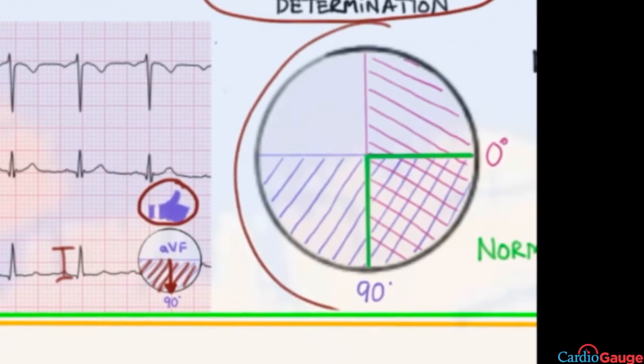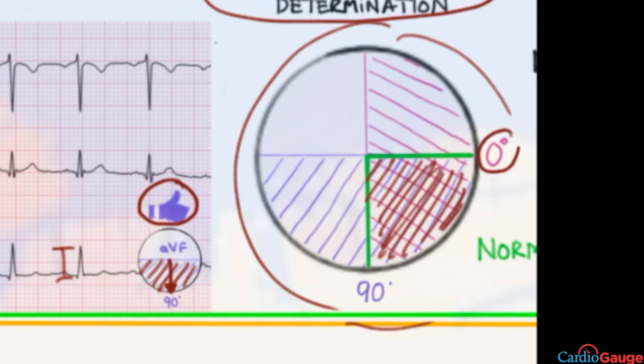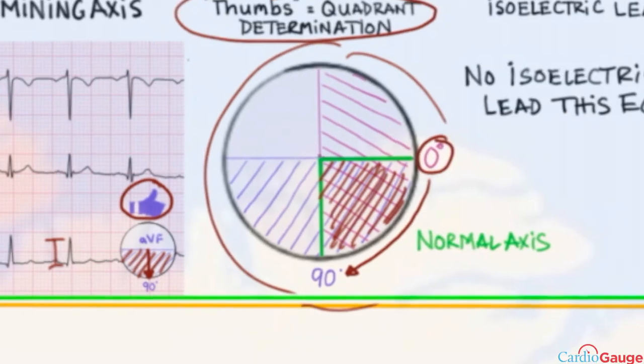So since both of those things are true, you can go over here. And the intersection of those two is here. And you've got an axis from zero degrees to 90 degrees, which is normal. At our institution, a normal axis is defined as minus 30 degrees to 100 degrees. But different places have different definitions. And some will define normal as just zero to 90. Anyway, we use minus 30 to 100.